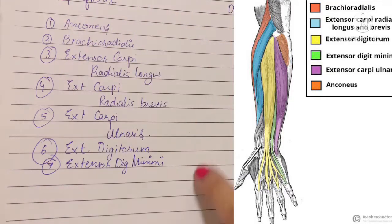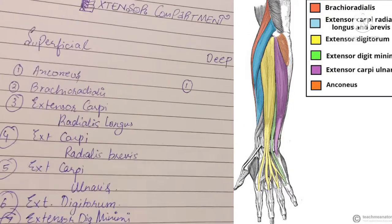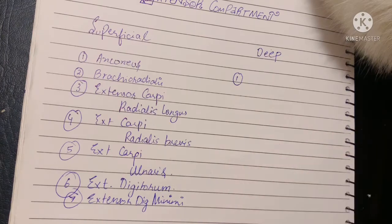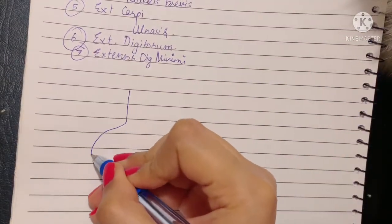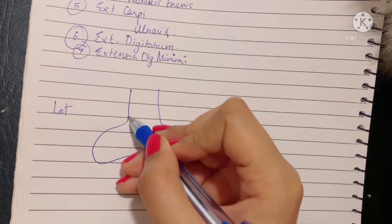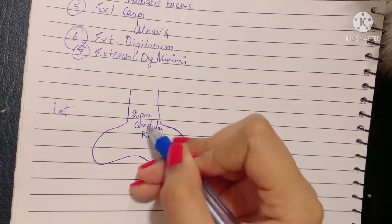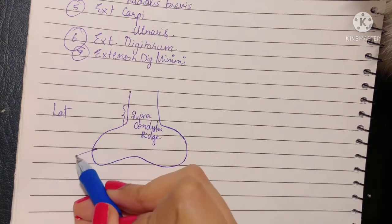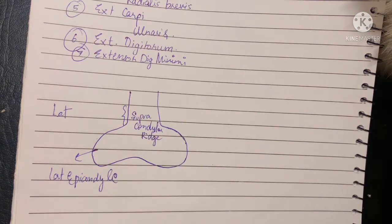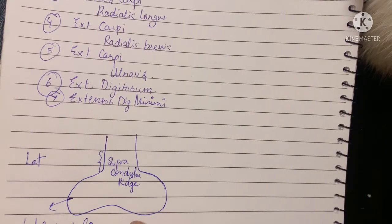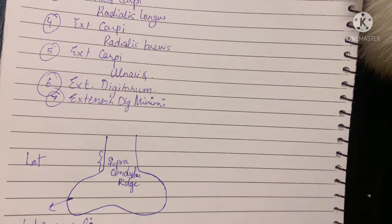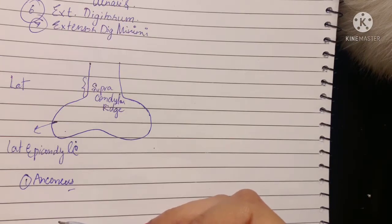Now let's talk about the origins and insertions of these muscles, starting with the anconeus. The lower end of the humerus has a supra-condylar ridge, and right below it is the lateral epicondyle — most of your superficial muscle origins will be from this area. The anconeus originates from the posterior part of the lateral epicondyle of the humerus and is inserted into the lateral aspect of the olecranon process of the ulna.